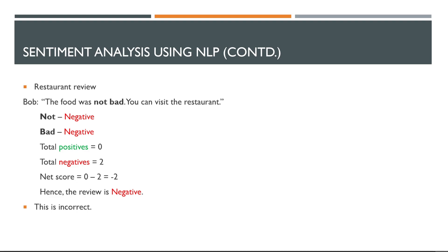But this does not work all of the time. Here, Bob says: 'The food was not bad. You can visit the restaurant.' The dictionary would see that the words 'not' and 'bad' were used, which without context are indeed negative, so this gives the sentence a score of negative 2. But the sentence is not negative — the two negatives cancel each other out. The review is neutral.